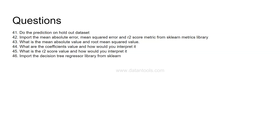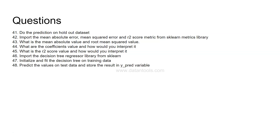Next, import the Decision Tree Regressor library from sklearn. Earlier we tried linear regression; now we are trying with the more sophisticated Decision Tree Regressor. A decision tree can be used for both classification and regression — here we are specifically dealing with a regression problem. Initialize and fit the decision tree on the training data with default parameters. You can print the initialized model object to see all the default parameters.